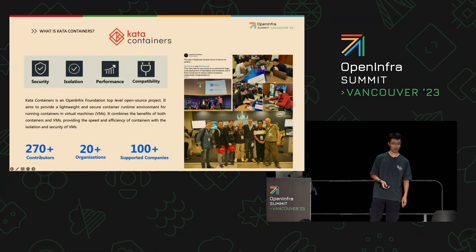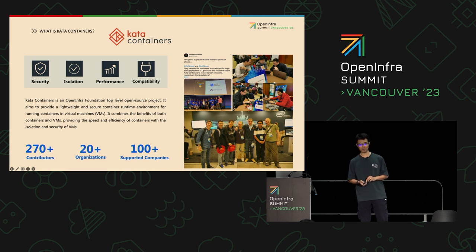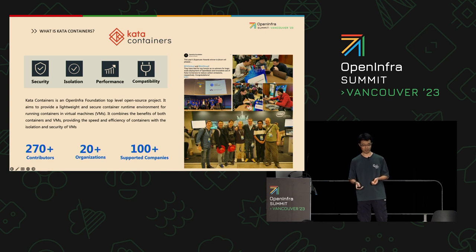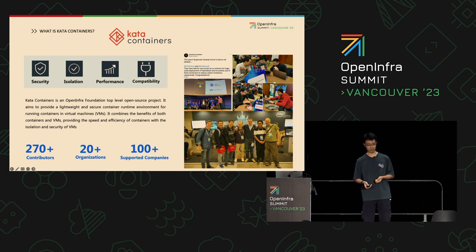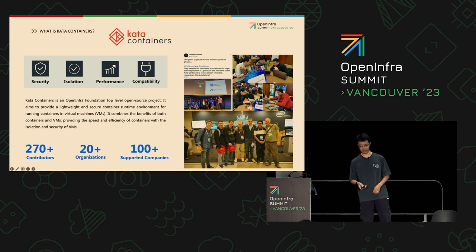The Kata Containers project is now an OpenInfra Foundation top-level project. We have many developers around the world — more than 200 contributors from more than 20 organizations, and more than 100 supporting companies.